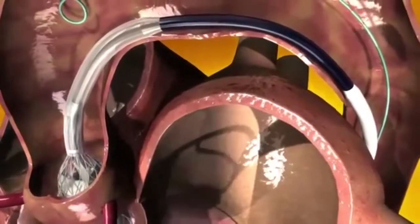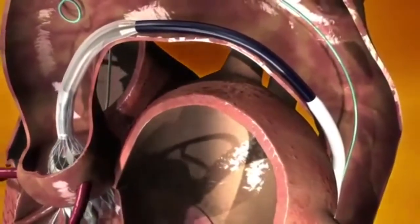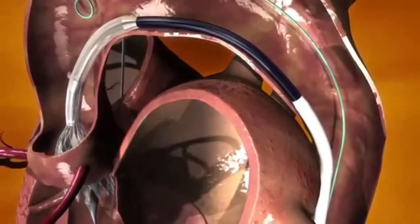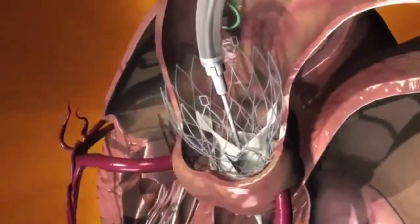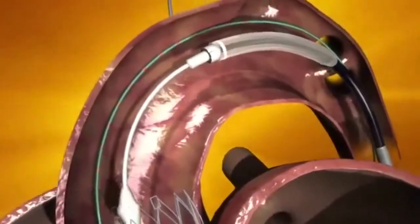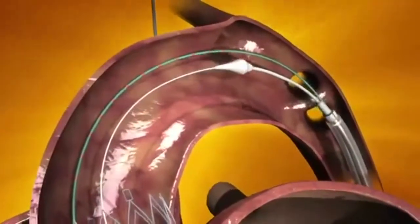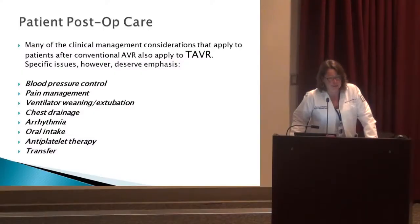Long-term prognosis is poor for anyone with moderate to severe aortic regurgitation after TAVR. Post-operative care for these patients involves blood pressure control, pain management, ventilator weaning and extubation if intubated, and chest drainage if we performed a transapical approach.